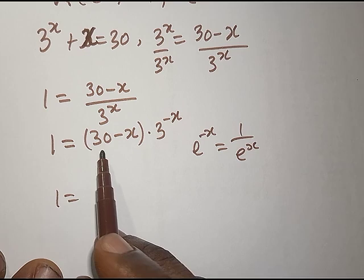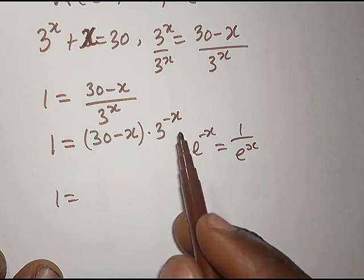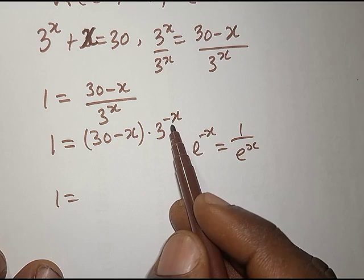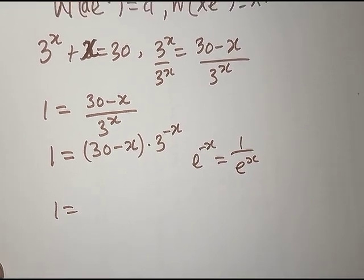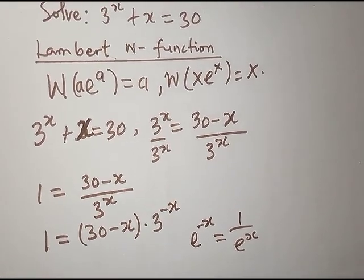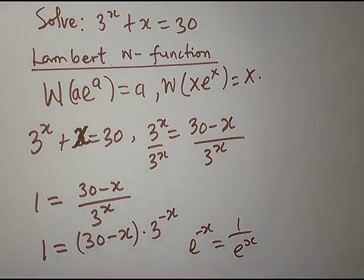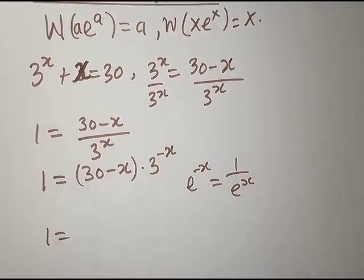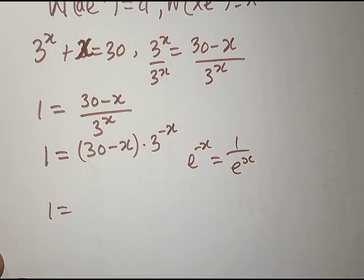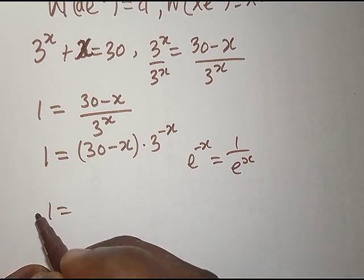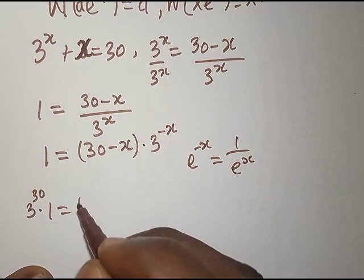Now we have 1 = (30 − x) · 3^(−x). Our intention is to write the equation in the form of the Lambert W function. Since we have 30 − x as both a coefficient and a power, I'm going to multiply both sides by 3^30.